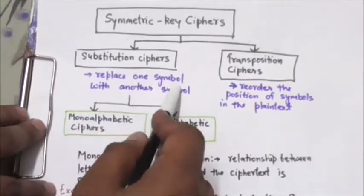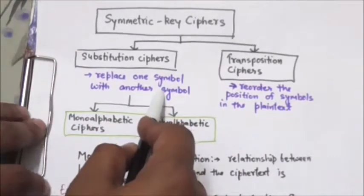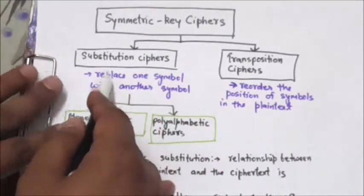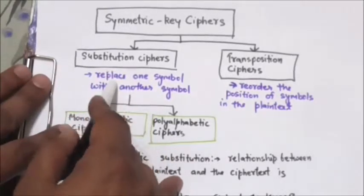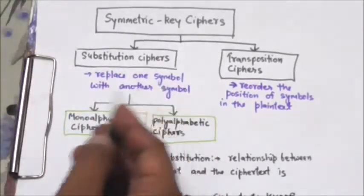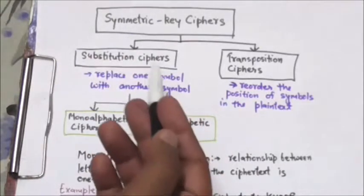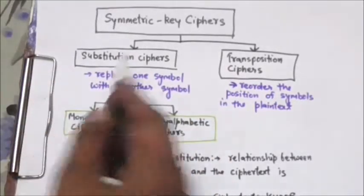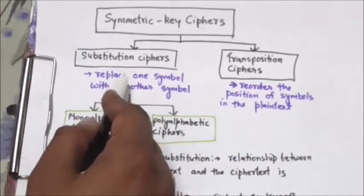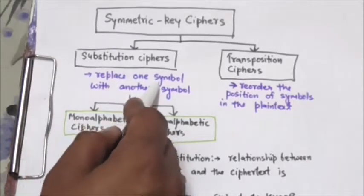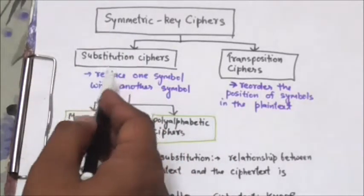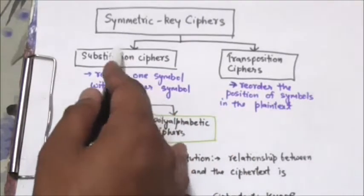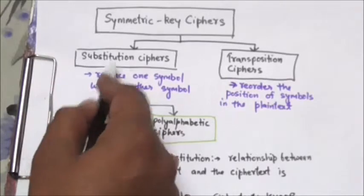In a substitution cipher, we replace one symbol with another. If the symbols in the plain text are alphabetic characters, we replace one character with another — for example, we replace letter A with letter D, letter T with letter Z. If the symbols are digits from 0 to 9, we can replace 3 by 7 or 2 by 6.